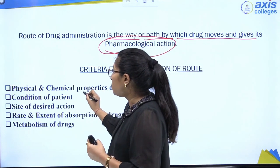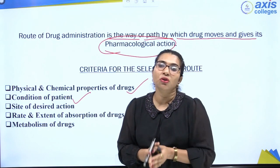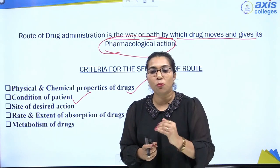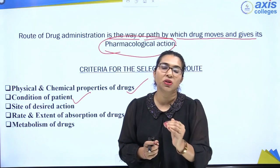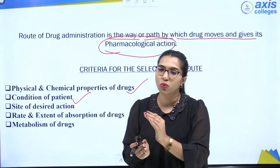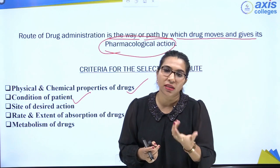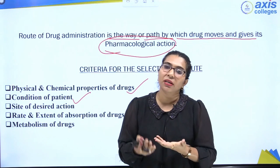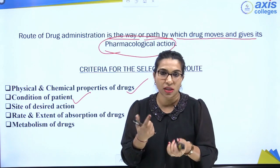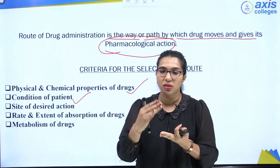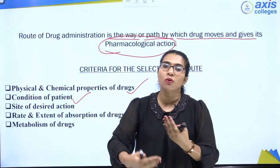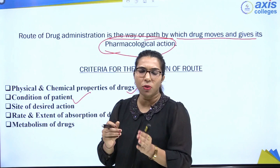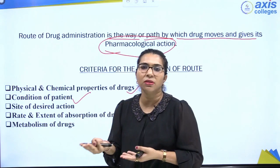The next important criterion is the condition of the patient. If a patient is unconscious or in severe pain, they won't be able to swallow a tablet or syrup, so the oral route cannot be used. In that case, the parenteral route is preferred. If a patient is in a normal condition with no severe symptoms, the oral route can be given in the form of tablets or syrups.